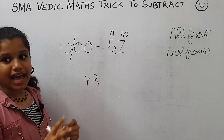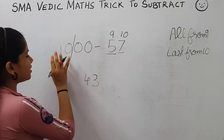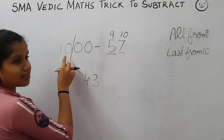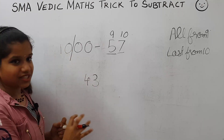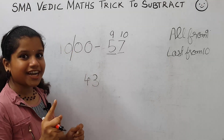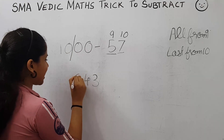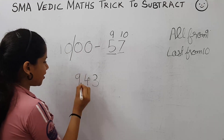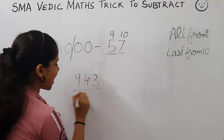Now we have to subtract 1 from the left side of the slash. What is 10 minus 1? It is 9. Write 9 on the left side. This is the answer: 9,943.